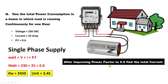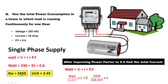After improving the power factor by connecting the capacitor, there are changes in current. Using the same formula to find current — with power as 3450 watts, voltage as 230 volts, and the improved power factor of 0.9 — the current comes out to 16.66 amperes. Previously the current was 25 amperes, but after connecting the capacitor, it is reduced to 16.66 amperes.